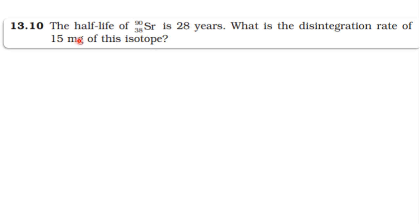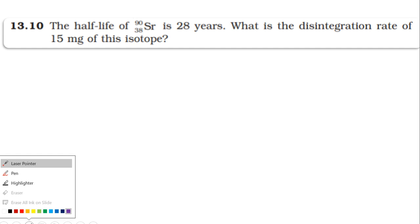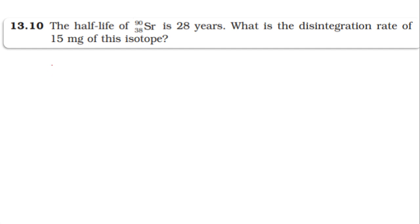From a nuclear topic: the sample number — the half-life of Sr-90 is 28 years. What is the disintegration rate of 15 milligrams of this isotope? The disintegration rate, or activity, is given by dN/dt, which equals lambda into N — the number of particles present at that instant.